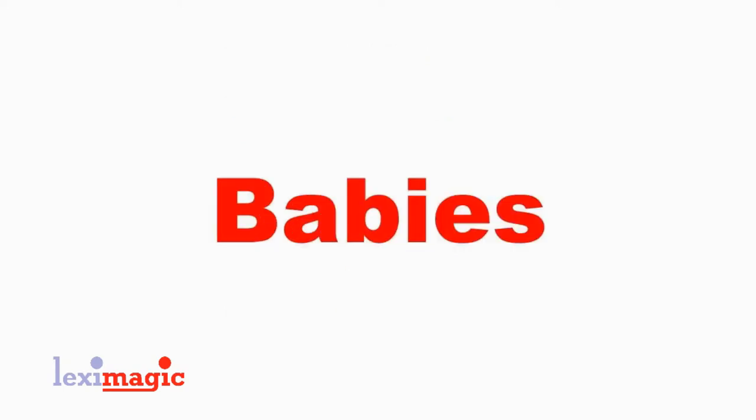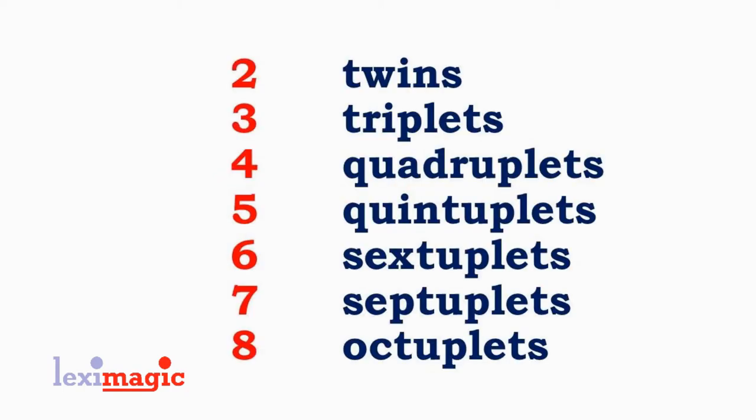Then we have words to describe many children being born together. When two children are born together, we call them twins. When three children are born together, we call them triplets. Four: quadruplets. Five: quintuplets. Six: sextuplets. Seven: septuplets. Eight: octuplets.